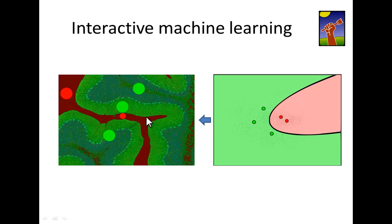If you are not happy with the current result — for instance, I see some problems here — you can give further annotations and thus improve your classifier. All of this is shown in more detail in the other videos that you can see on the documentation page.